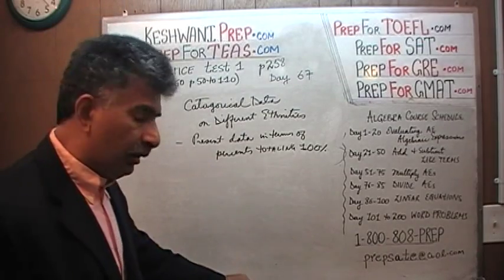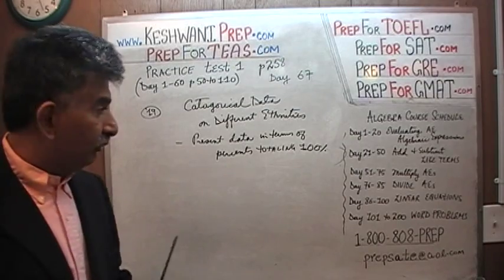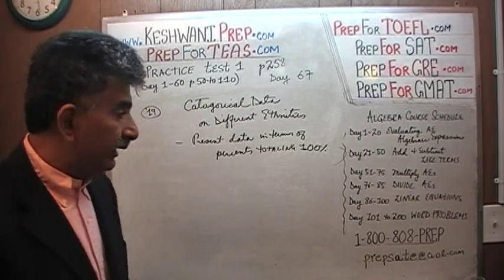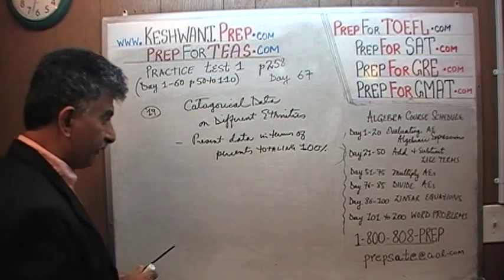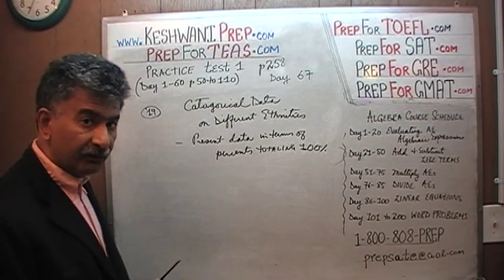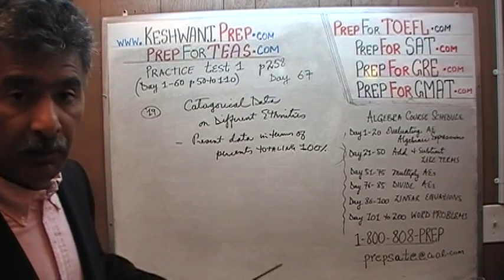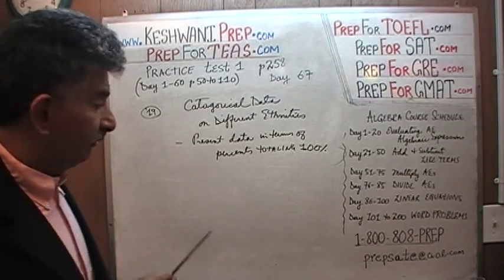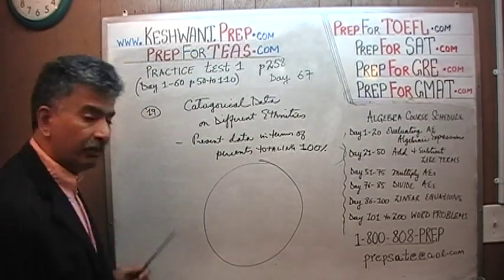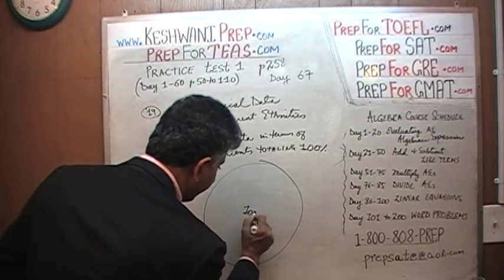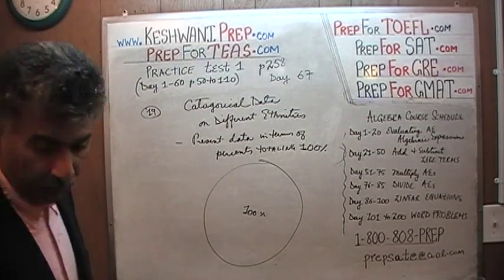You have to understand the concept behind it. When you have categorical data on different aspects of something — for example, different ethnicities — let's say we're looking at the total number of nurses in the country. Since we're talking about the total, that total has to represent 100%. Now we're going to break it up into different ethnicities.